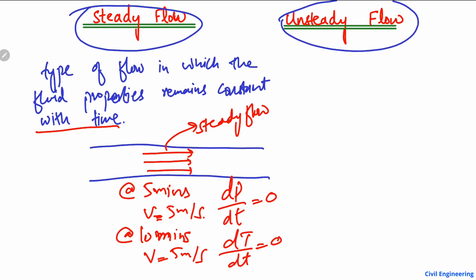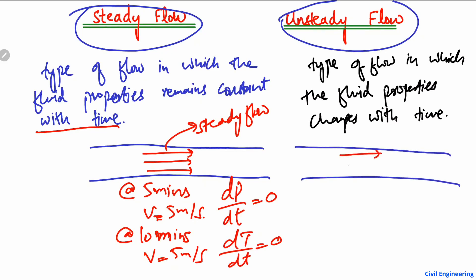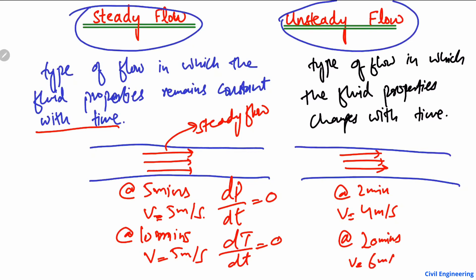Unsteady flow is the opposite of that — it is the type of flow in which the fluid properties change with time. For example, if I draw a pipe with water flowing through it, and at 2 minutes the velocity of the fluid is 4 meter per second, and after 20 minutes the velocity changes to 6 meter per second, the velocity is changing with respect to time. This means the flow is not steady flow but unsteady flow.